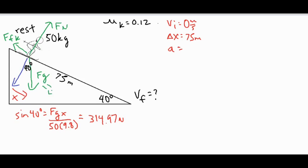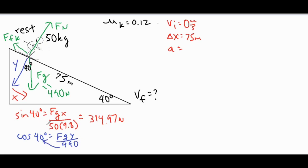We label Fg as 490 newtons, then do the same for the vertical component — the y-component. Because it is adjacent to the 40-degree angle we use cosine: cosine of 40° = FgY / 490. Cross-multiplying gives us a perpendicular component of 375.36 newtons.